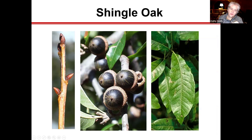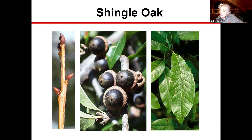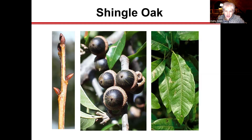Shingle oak is the one that breaks the rules — no lobes on the leaf, but there is a bristle hair at the very tip. The lobes and sinuses won't be there, but you'll have acorns. So if you have acorns, you need to look at the leaf more closely — and if you've got acorns and no lobes but a bristle hair, you're looking at shingle oak.